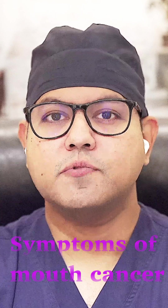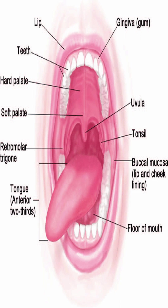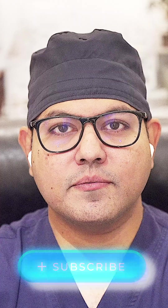What are the symptoms of mouth cancer? The mouth is divided into many subsites like the lips, tongue, floor of the mouth, cheeks, and retromolar trigone. Each subsite produces different symptoms.